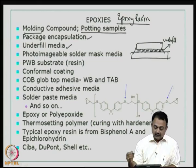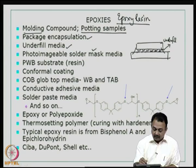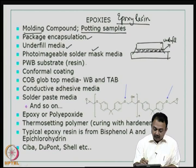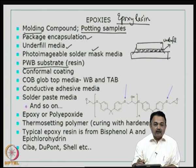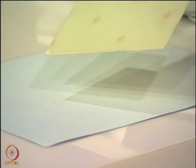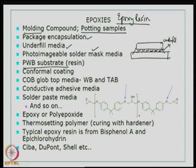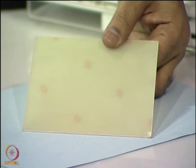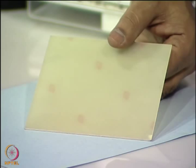This particular slide is basically to tell you the different application areas for epoxy. It can also be used as a photo imageable solder mask material in the printed circuit board industry. It is also used as a key ingredient in the manufacture of printed wiring board substrate. I want to show you a sample of a blank printed wiring board substrate — this is a substrate without copper on both sides. Basically this is an epoxy material. This is a very rigid, very hard material. You can also get flex epoxy materials.